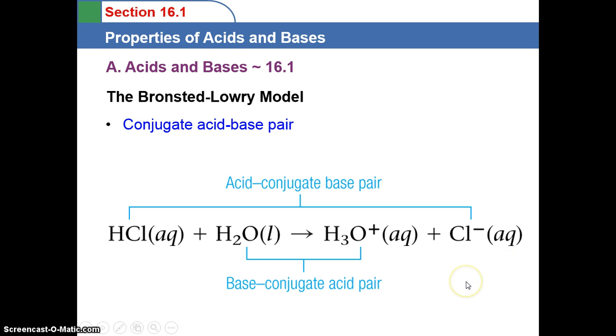Let's look at the conjugate acid-base pair, and remember this is the theory according to the Bronsted-Lowry model. For example, the HA would be HCl, so hydrochloric acid, and it is our proton donor.